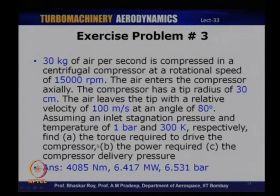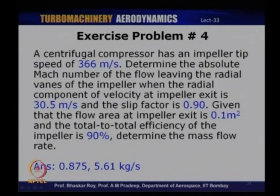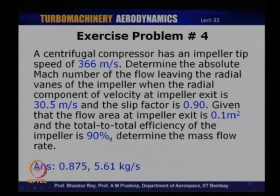Exercise problem 4: A centrifugal compressor has an impeller tip speed of 366 m/s. Determine the absolute Mach number of flow leaving the radial vanes when the radial velocity component at impeller exit is 30.5 m/s and slip factor is 0.9. Given flow area at impeller exit is 0.1 m² and total-to-total efficiency is 90%, determine the mass flow rate. Answers: absolute Mach number = 0.875, mass flow rate = 5.61 kg/s.